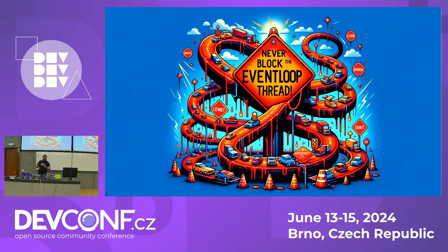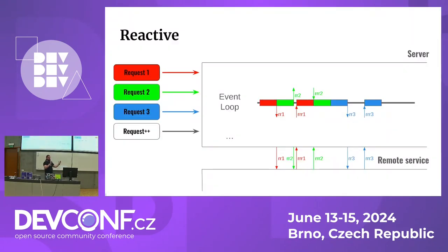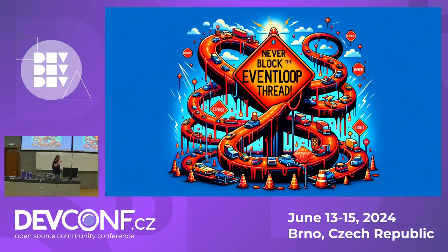When doing reactive, there is a single golden rule you must obey: never ever block the event loop thread. Because if somebody decides to block on the event loop thread, this whole model goes sideways. In Quarkus, if you try to do this, after two seconds you will get an exception — not stopping your execution, but printing a stack trace that you are blocking other executions.